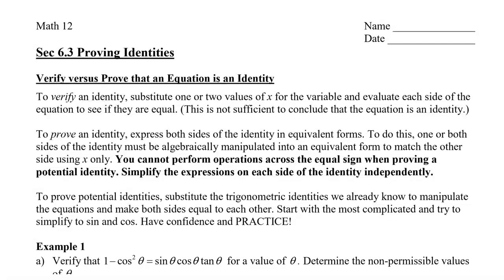So therefore we're only going to use x or theta. A couple of rules: you cannot perform operations across the equal sign when proving a potential identity, such as you can't move a number or an expression from one side of the equal sign to the other side. And another thing is you can't multiply both sides by an expression either.